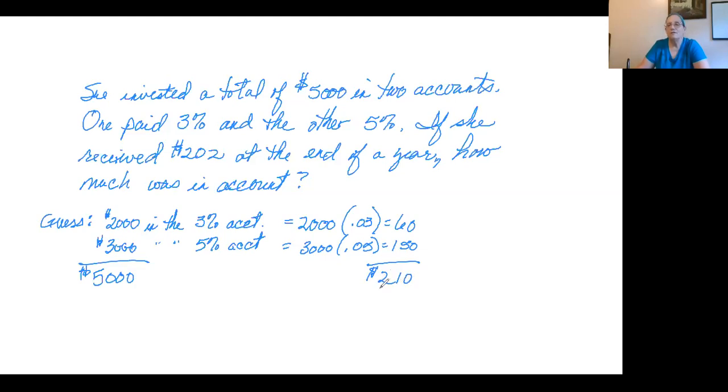As a matter of fact, we also know that since $210 is a little higher than $202, she had a little bit less in the 5% account and a little more in the 3% account because that would reduce the amount of interest she got.